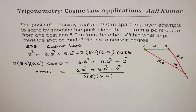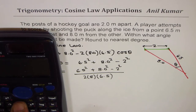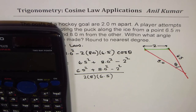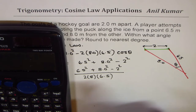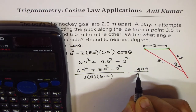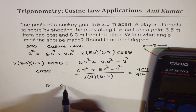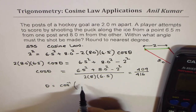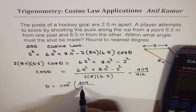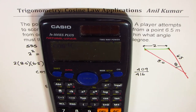Let's use the calculator to figure this out. We get 6.5 squared plus 8 squared minus 2 squared, divided by 2 times 8 times 6.5. So we get 409 over 416. The idea is to get angle theta as the inverse cosine of whatever you calculated, which in our case is 409 over 416. So let's do shift cos inverse of our answer.